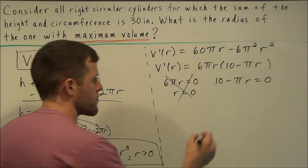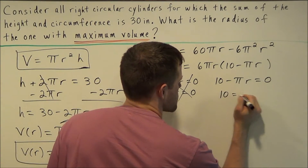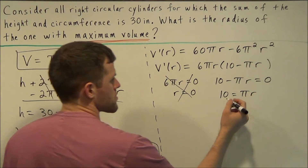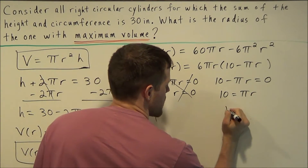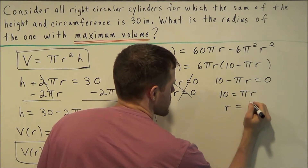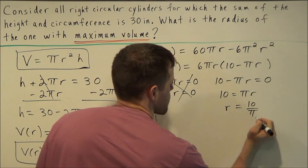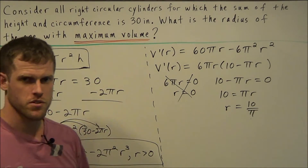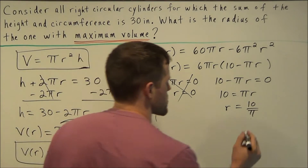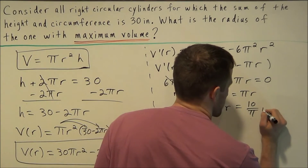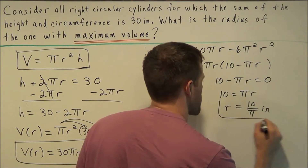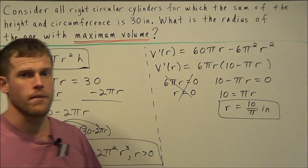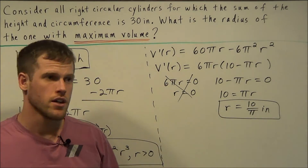The second factor gives us 10 minus πr equals zero. Adding πr to both sides and dividing by π, we get r equals 10 over π. Throwing in the units, since radius is a distance, this is 10 over π inches.